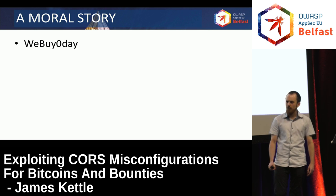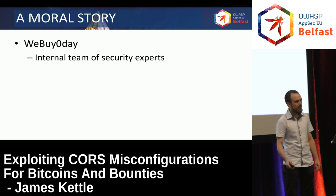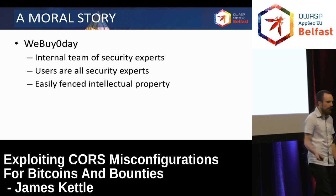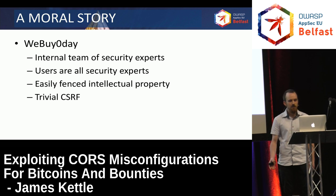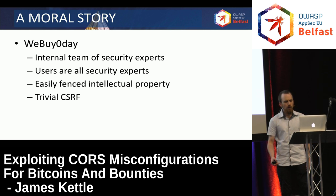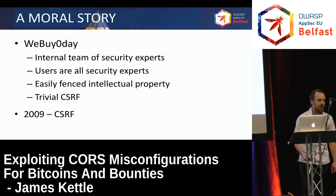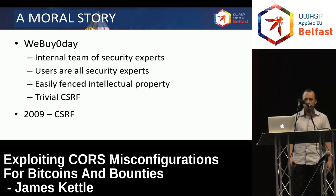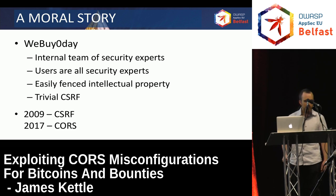But in retrospect, I have to wonder how a security company staffed by an internal team of security experts, where all the users are also security experts, that's full of easily sold intellectual property, can have a trivial cross-site request forgery vulnerability that's really easy to find and exploit. I think the only answer is that back in 2009, awareness of cross-site request forgery was just really poor. The vulnerabilities were there, they were easy to find, but nobody was looking for them. And what I'm going to show you today is that that's where CORS is at the moment.